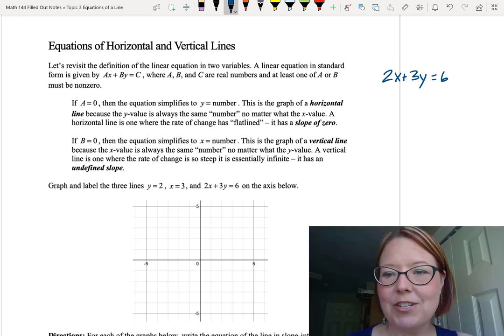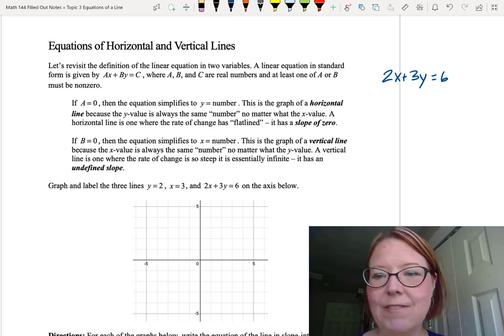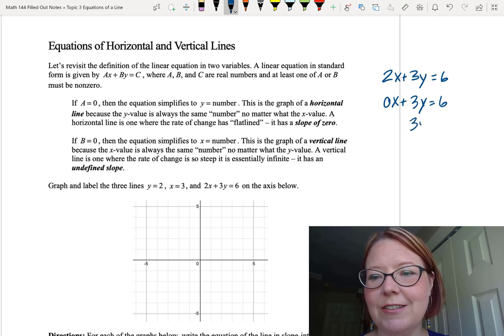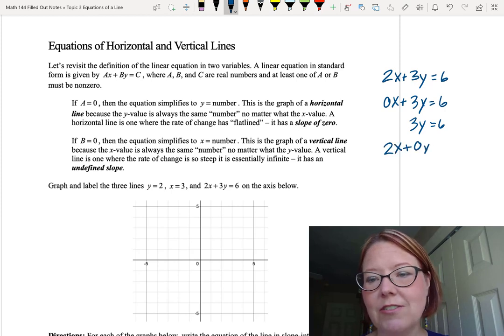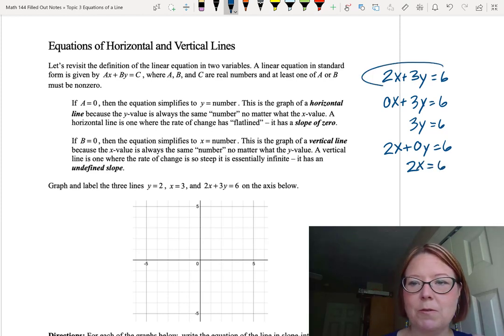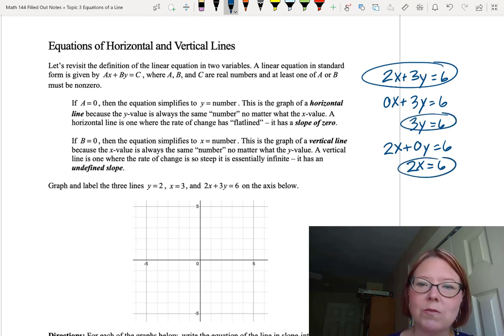We could have the case where the a value is 0, so something like 0x plus 3y equals 6, or just 3y equals 6, or we could have the case where the b value equals 0, so something like 2x plus 0y equals 6, or simplifying 2x equals 6. All of these are acceptable forms of a line, and that's what we mean when we say that at least one of a or b must be non-zero.